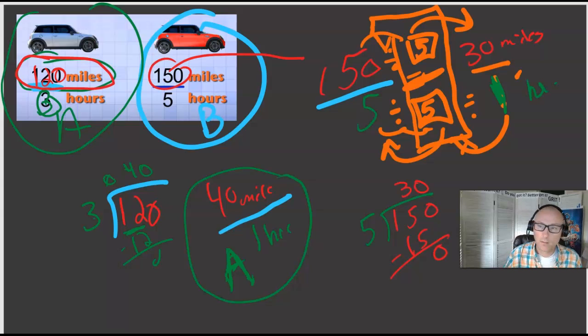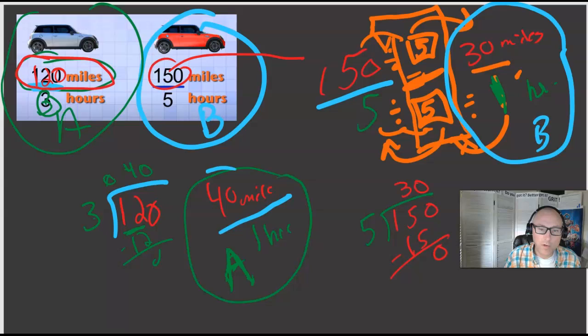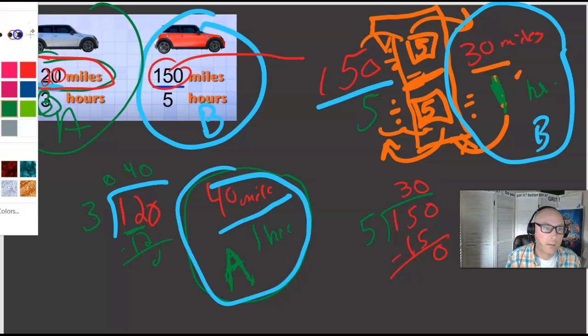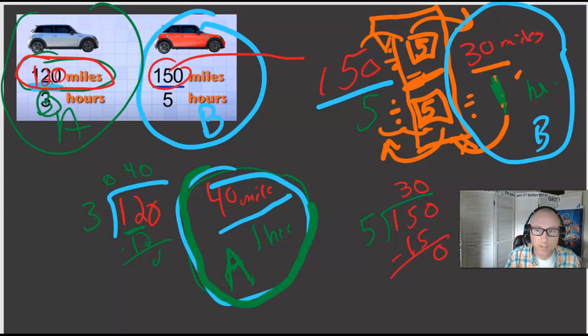So which one's faster? Car B we did this 30 miles per hour, or 40 miles per hour? Obviously the A car is faster.